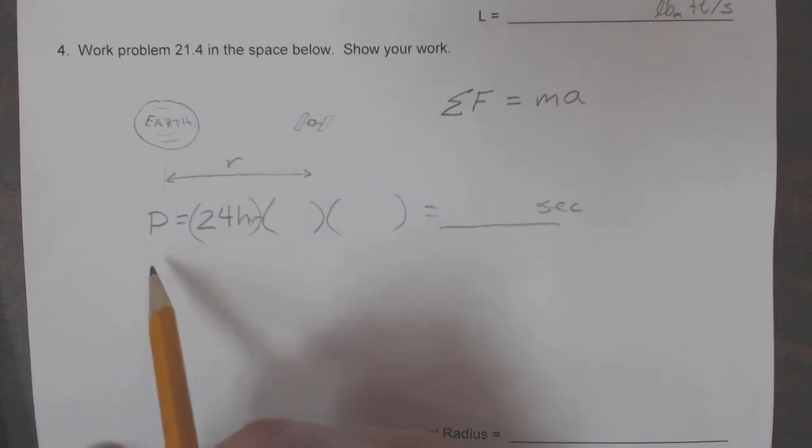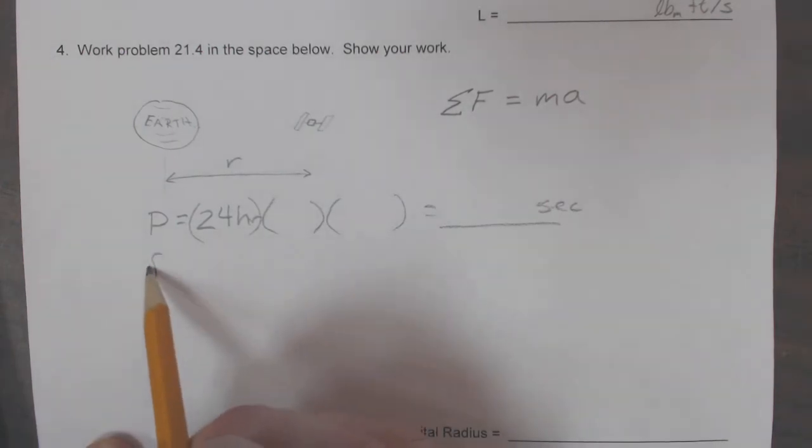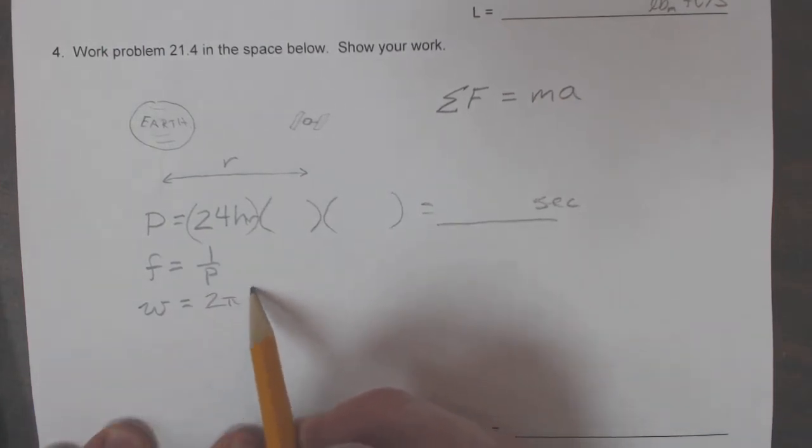If you get the period, then you can figure out what the frequency is of rotation of that thing. That's 1 over P. And of course, if you know the frequency, then you can find out what the rotational velocity is of that satellite. That's 2πf.